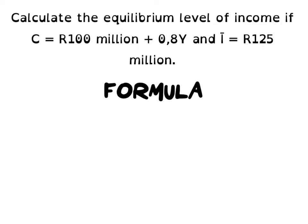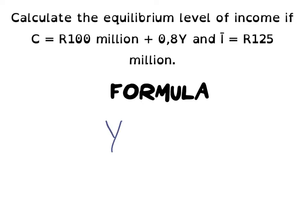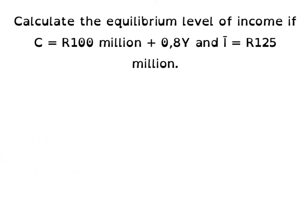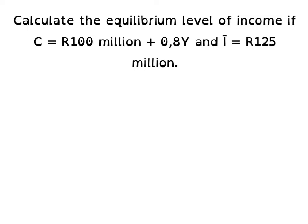In order to solve question one, we are going to use the following formula — this formula will also be used to solve questions two and three. We state: Y is equal to alpha times autonomous A. Remember that alpha is our multiplier, and for this formula our multiplier is one divided by one minus c. For autonomous spending A-cap, we have A-cap equal to C-cap plus I-cap, where C-cap and I-cap signify our autonomous consumption and autonomous investment spending.